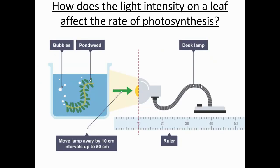Our investigation would look something like this: we have pond weed underwater in a clear container so we can count the number of bubbles, and we'll have a lamp that we measure the distance from. We can then change the distance, which will change the light intensity, and that will affect the rate of photosynthesis — the number of bubbles we see. So what we're actually measuring practically is how the distance from a lamp affects the number of bubbles per minute.